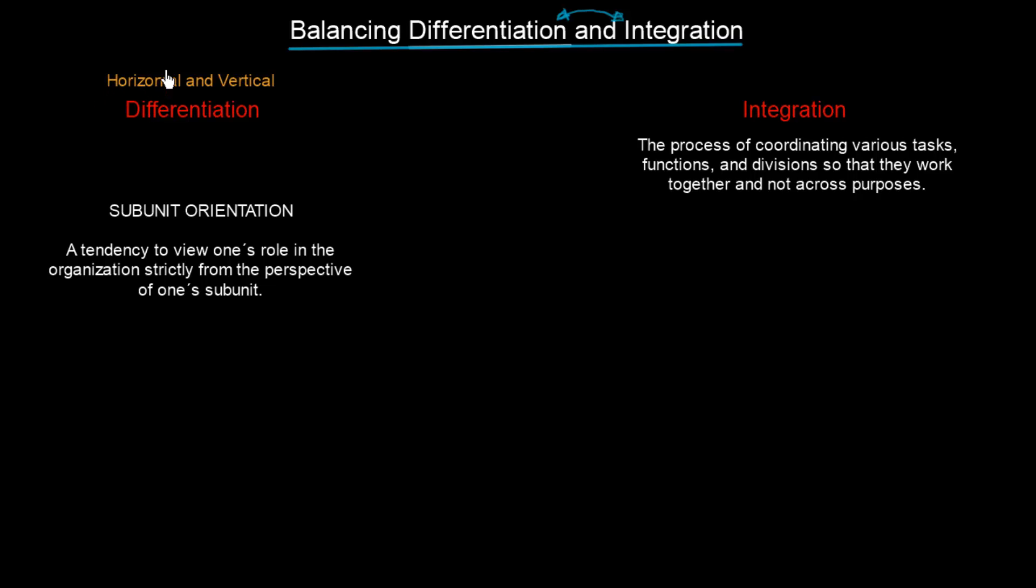We have horizontal differentiation, which is allocation of resources according to tasks. So here we have tasks. And in vertical, we are grouping according to authority. Why is differentiation important? Because it allows for specialization.